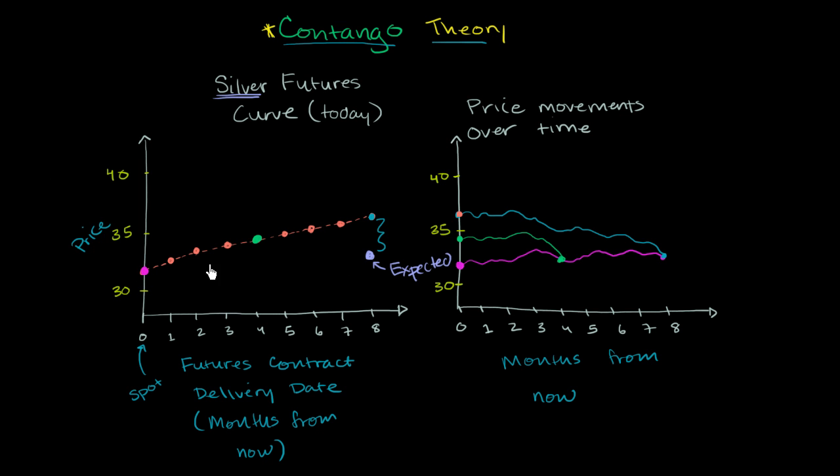This is how things trend over time. So in magenta, I have the spot price trending over time. And then you can see the four month contract that's for delivery in four months today. Its price is a little bit under $35. But as you approach its actual delivery date, so now we're actually moving forward in time,